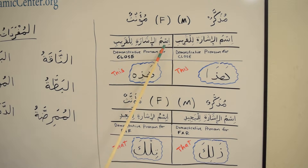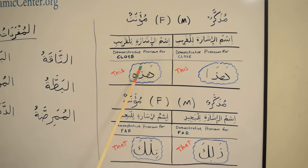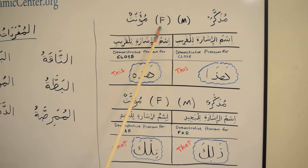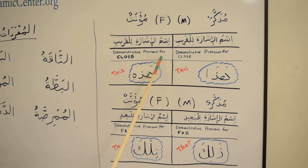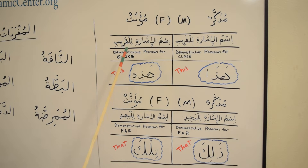Then we learned another Ismulisharati lilqarib, which also translates as 'this,' except that it is Muannath — it is feminine. It is the counterpart of the masculine Hadha. So you say, for instance, Hadhihi Sayaratun — this is a car.